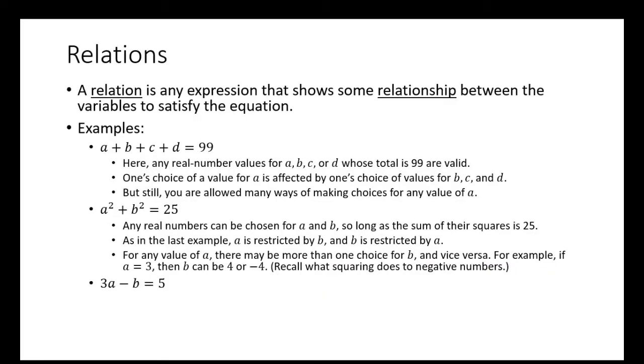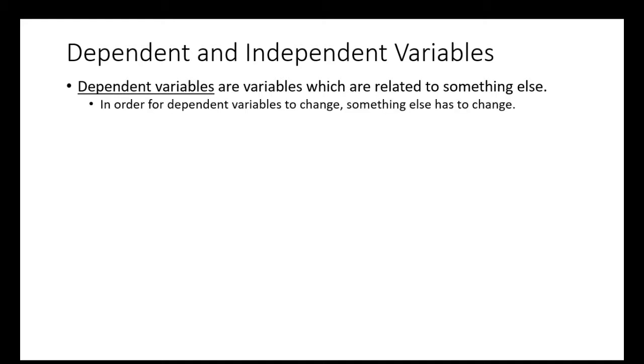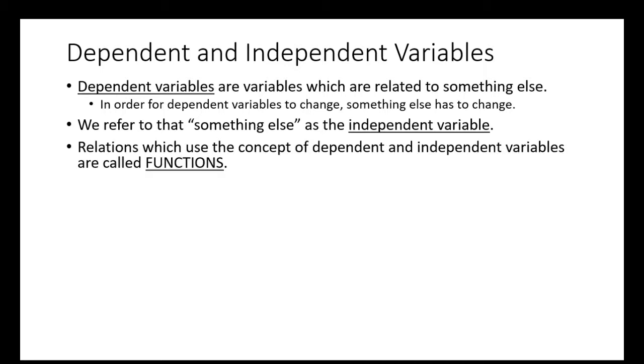3a - b = 5. In this case, plugging in a number for a determines a value for b. For each a chosen, there can be only one and exactly one possible value for b. For example, if a is 1, then b is -2 such that the result will be 5. Dependent and independent variables: dependent variables are variables which are related to something else. In order for dependent variables to change, something else has to change. We refer to that something else as the independent variable. Relations which use the concept of dependent and independent variables are called functions.